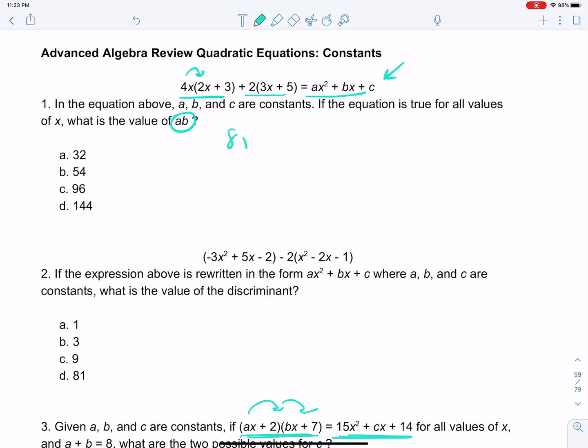Here's what we're going to do. 4x times 2x is 8x². 4x times 3 is 12x. 2 times 3x is 6x. 2 times 5 is 10. And this all equals ax² + bx + c.